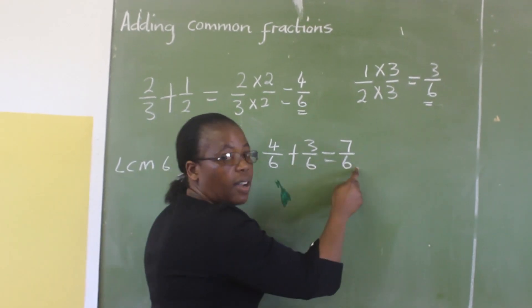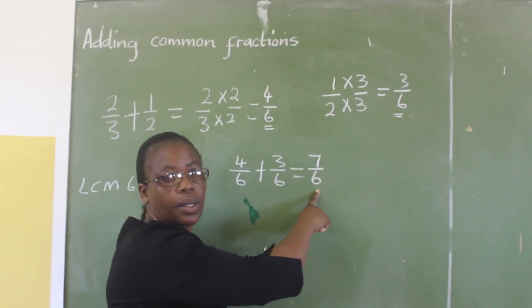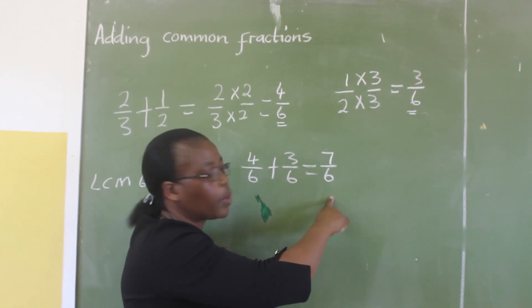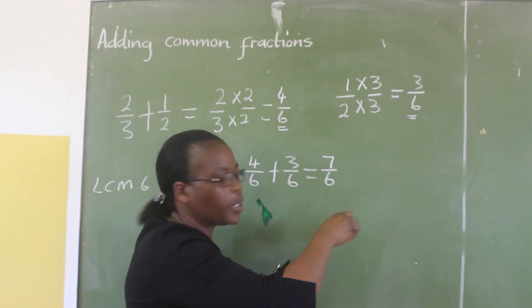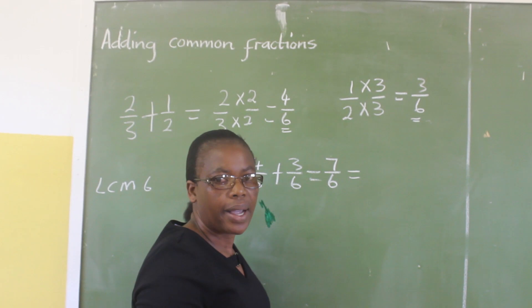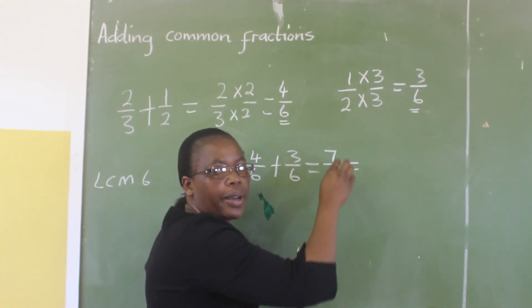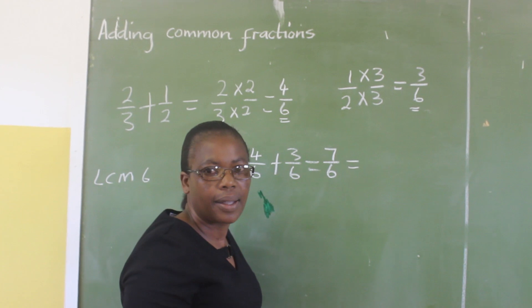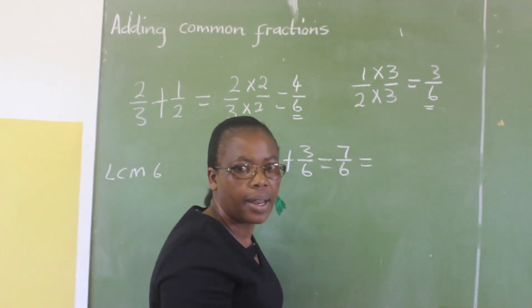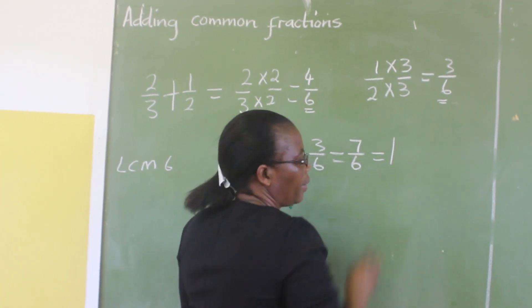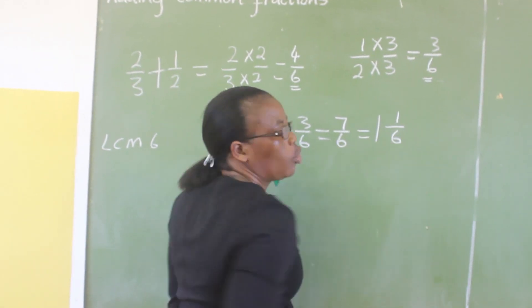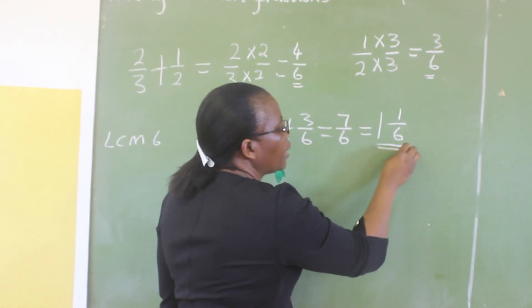We get 7 over 6. When the answer is like this, we cannot leave it like this. We simplify it. We call this an improper fraction. We simplify it to a mixed number. What we do is, we divide the numerator by the denominator. So we are saying 6 into 7 will get 1. Remember, 1 over 6 in the denominator. And this is the answer.